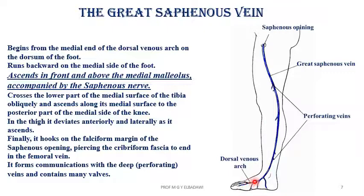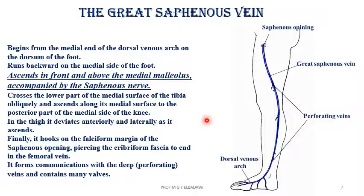Its start is important to know, and its relation to the medial malleolus is important. This vein is used for intravenous injection of fluids in emergency cases, like burns and other conditions. It begins at the medial end of the dorsal venous arch, which is formed from the common digital veins draining the digital veins of the toes. This arch has two ends: the lateral end forms the small saphenous vein or short saphenous vein, while the medial end forms the great saphenous vein or long saphenous vein. It ascends in front of the medial malleolus, accompanied by the saphenous nerve.